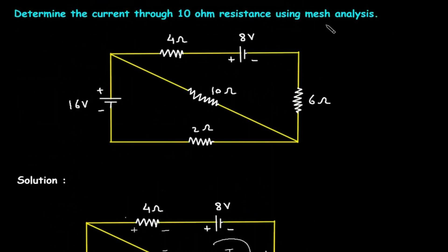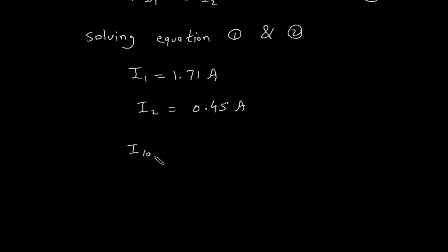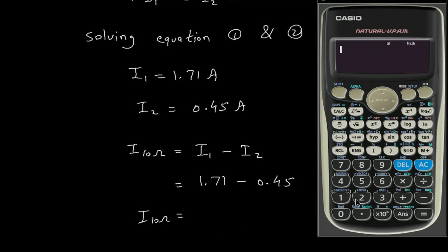We have to find the current through the 10 ohm resistance. Assuming this direction, the current is in the same direction as I1. So I10Ω equals I1 minus I2, because the direction of I2 is opposite to I1. Therefore I10Ω equals 1.71 minus 0.45, which equals 1.26 amperes.